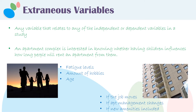If the apartment management changes, that might influence whether they move out. And if new amenities are suddenly included with rent, maybe that would influence whether people are likely to move out. All of these are examples of extraneous variables — variables that relate to either the independent or the dependent variable.